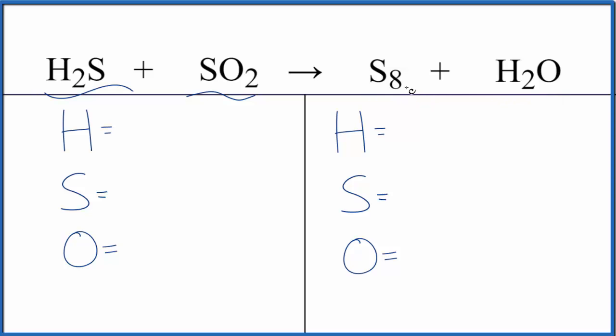This turns out to be a little bit of a challenging equation. So let's first count the atoms up, and then we'll balance the equation. Two hydrogen atoms. Be careful with the sulfur. We have one here and one here. So we have one plus one, two sulfur atoms, two oxygen atoms. Product side, two hydrogens, eight sulfurs, and then just the one oxygen.